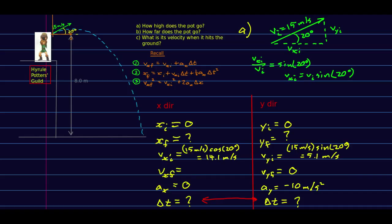The other thing is a_x is zero, and that tells us that v_xf is the same as v_xi.